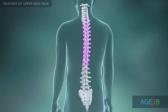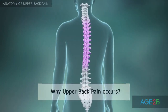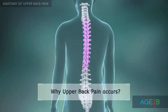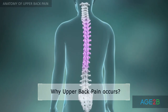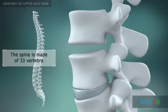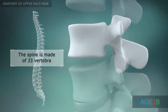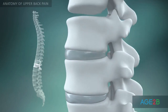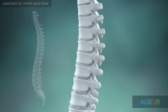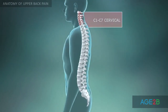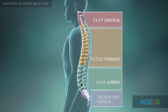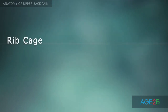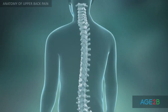In order to understand why upper back pain occurs, it's helpful to know the basic anatomy of the spine. The spine is made up of 33 individual bones called vertebrae. The vertebrae are numbered and divided into four regions.